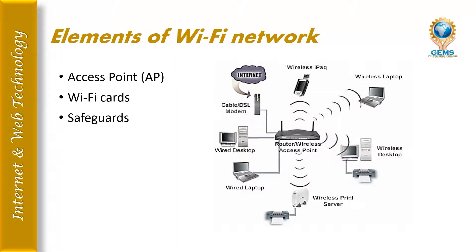The next topic is elements of a wireless network. There are three elements: the first is an access point (AP), the second is Wi-Fi cards, and the third is safeguards. You can see these in the images shown — there is an access point, Wi-Fi cards, and safeguards for the wireless network.